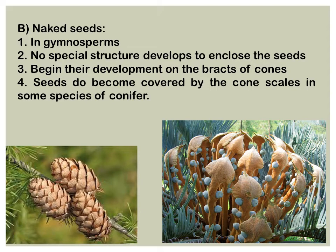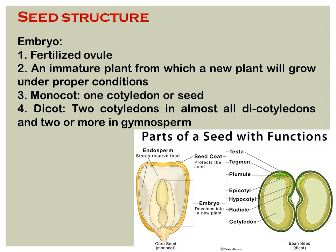In the case of gymnosperms, seeds are naked — no special structure develops to enclose them. They begin their development on the scales of the cone, as you can see in the figure. Seeds do become covered by the cone scales in some species of conifers. This is the key difference between gymnosperm and angiosperm seeds.